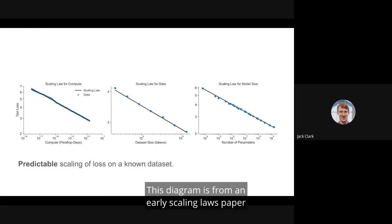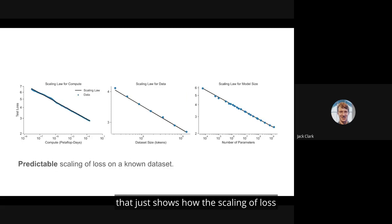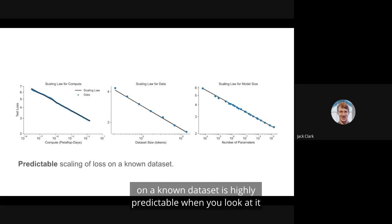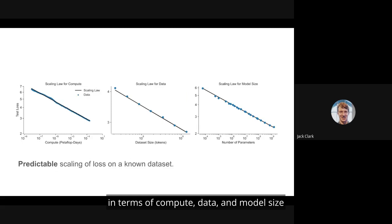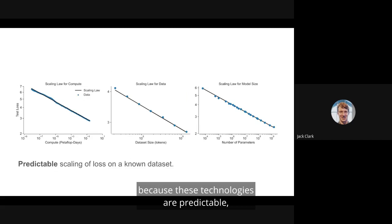This diagram is from an early scaling laws paper, but just shows how the scaling of loss on a known data set is highly predictable when you look at it in terms of compute, data, and model size. And what this means is that because these technologies are predictable, it's easier for multiple actors to develop them.